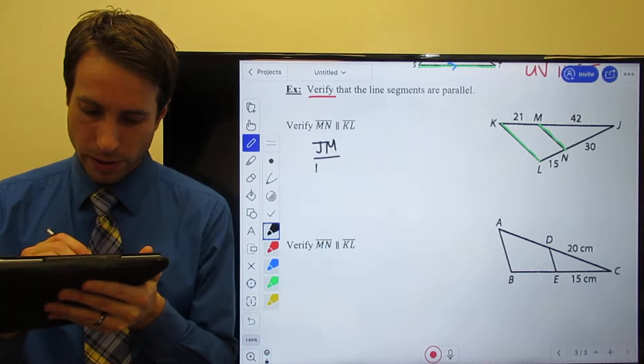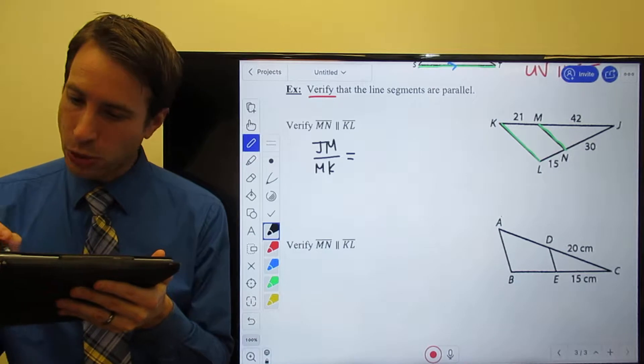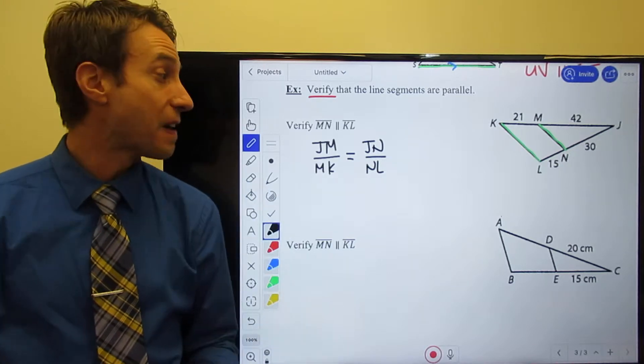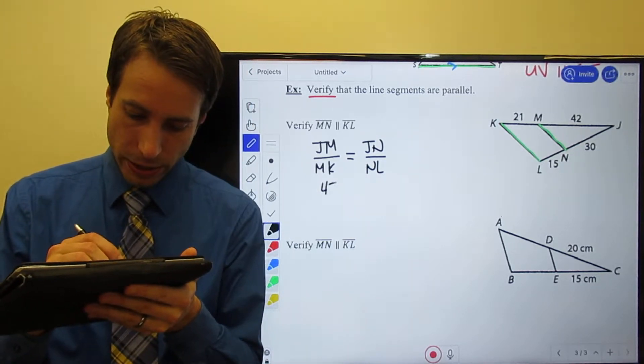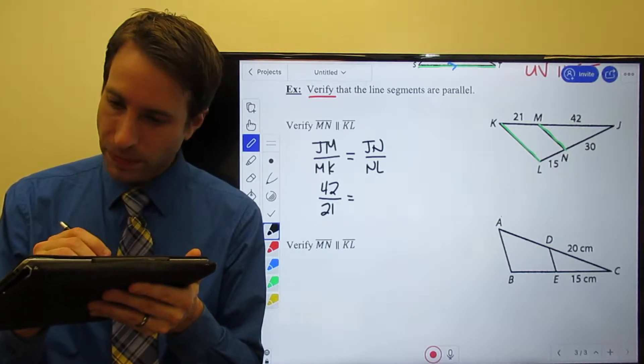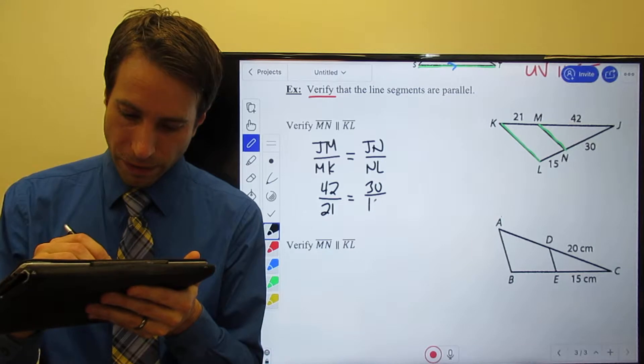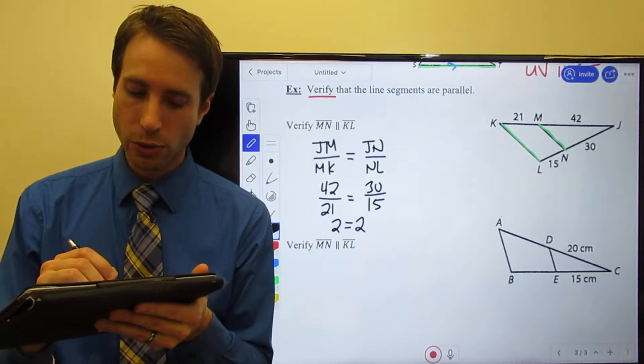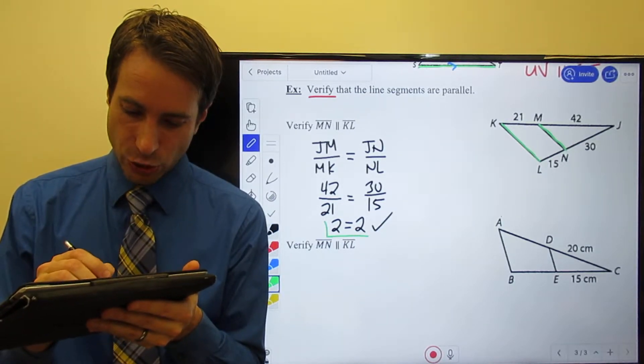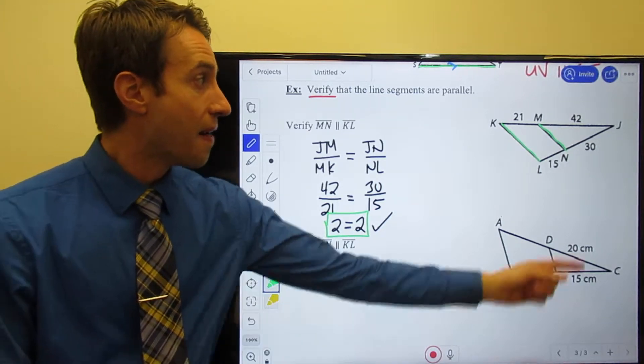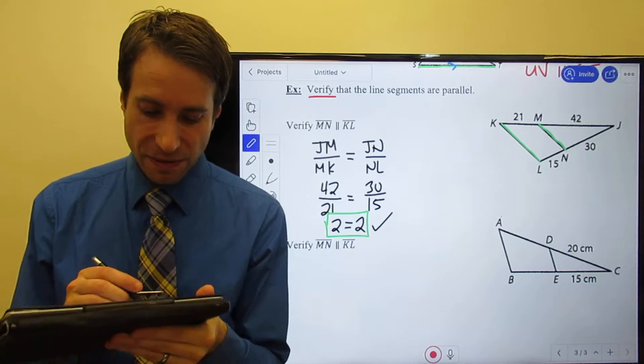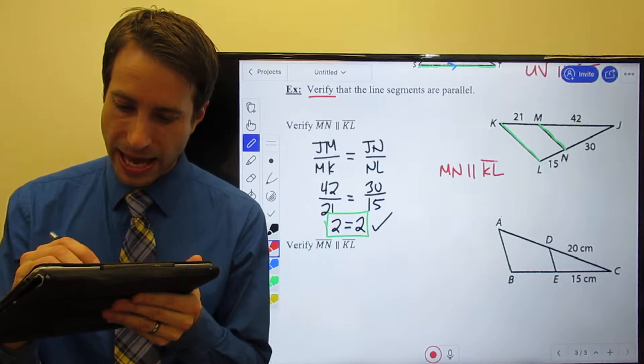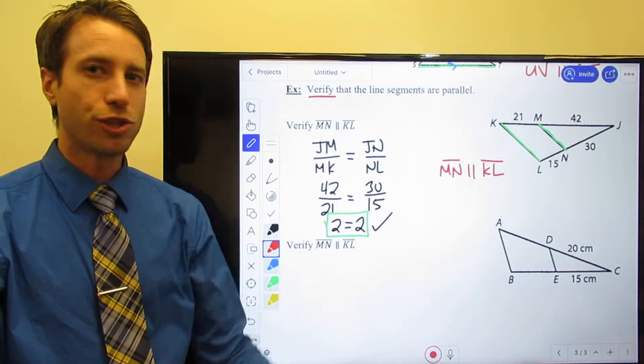JM over MK has to be equal to JN over NL. Well, let's find out if that's true. JM 42 over 21 divided by 30 over 15. 42 divided by 21 is 2. 30 divided by 15 is 2. Awesome. Look at that. That is a true statement. 2 is equal to 2. That means that the sides are divided proportionally. And we know that MN is parallel to KL. And boom, you just got verified.